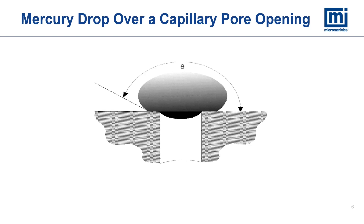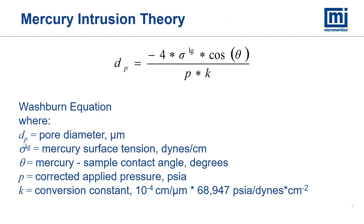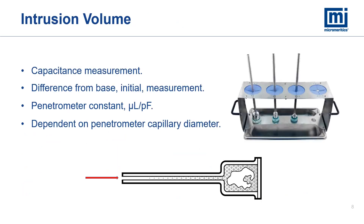Here we see a mercury droplet sitting over the opening to a capillary pore. Notice the definition of contact angle between the mercury and the surface — this is at the advancing edge of the droplet over the sample surface. The diameter of the pore being filled can be calculated from the Washburn equation, where the equilibrium applied pressure P is used with the surface tension of the mercury sigma, and the contact angle between the sample and the mercury theta, along with a conversion constant to keep the units straight to calculate the pore diameter. A change in capacitance as the mercury intrudes into the pores is recorded. Using a constant based upon the internal and external diameters of the penetrometer capillary stem, the capacitance change is converted into the volume of mercury intruding into the sample. This intrusion volume, recorded along with the applied pressure at which it occurs, forms the basis of the cumulative intrusion volume as a function of pore opening diameter.